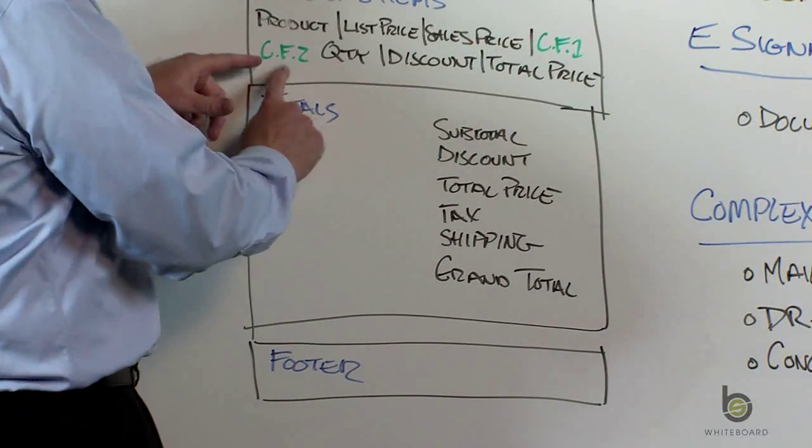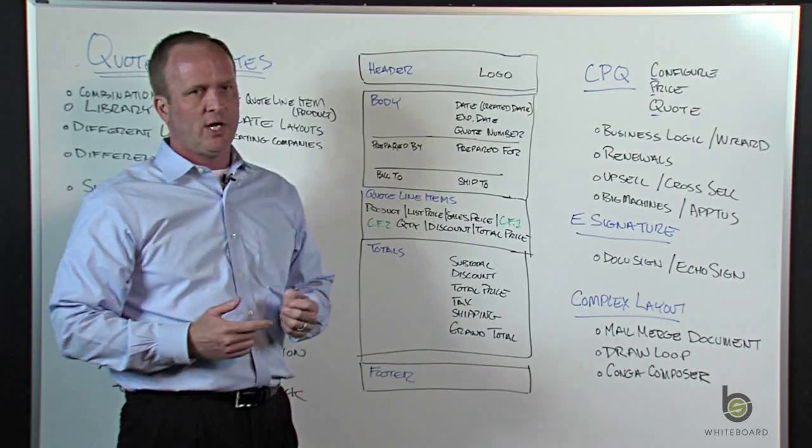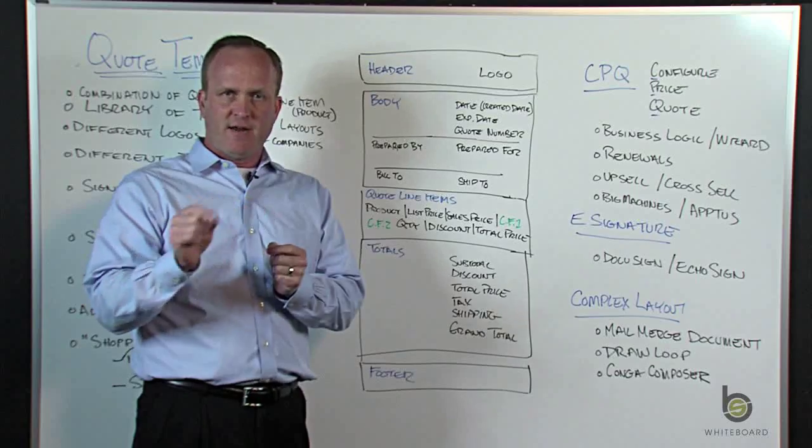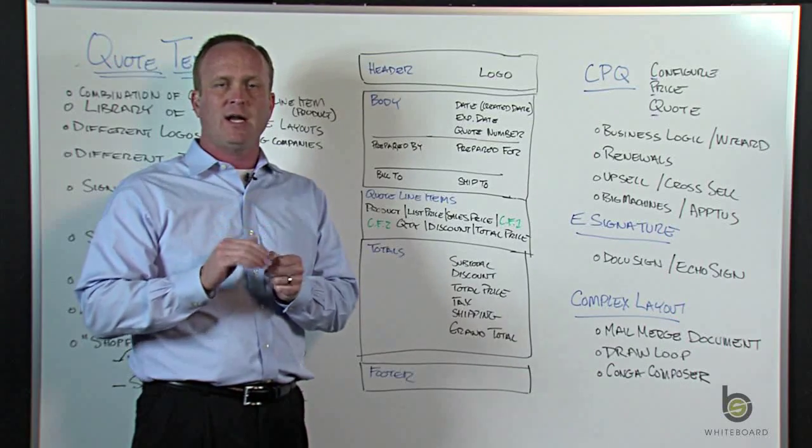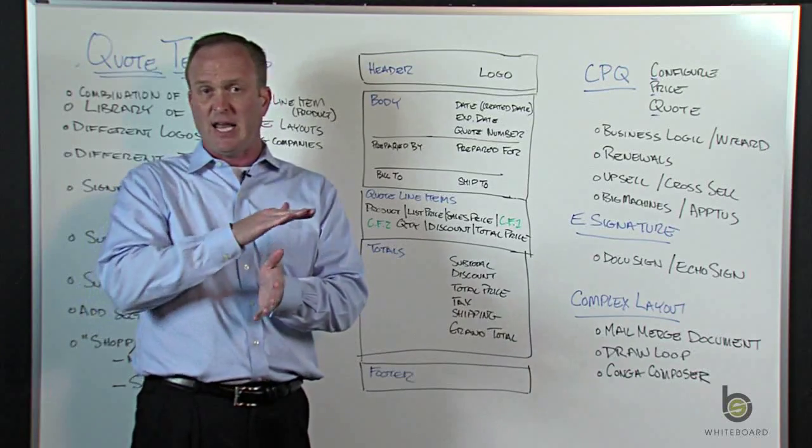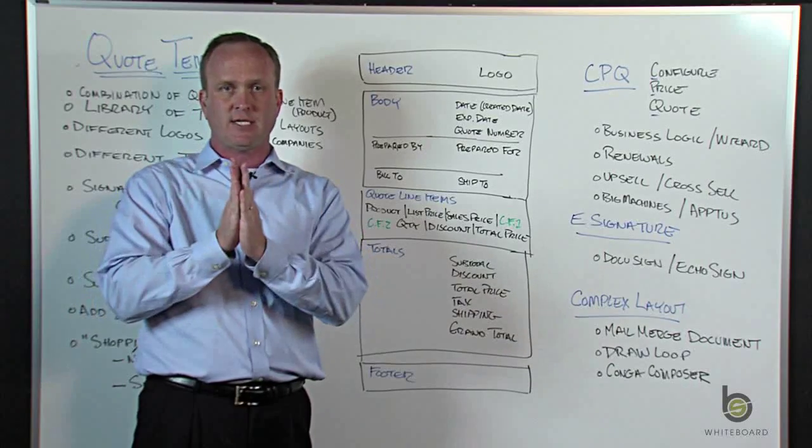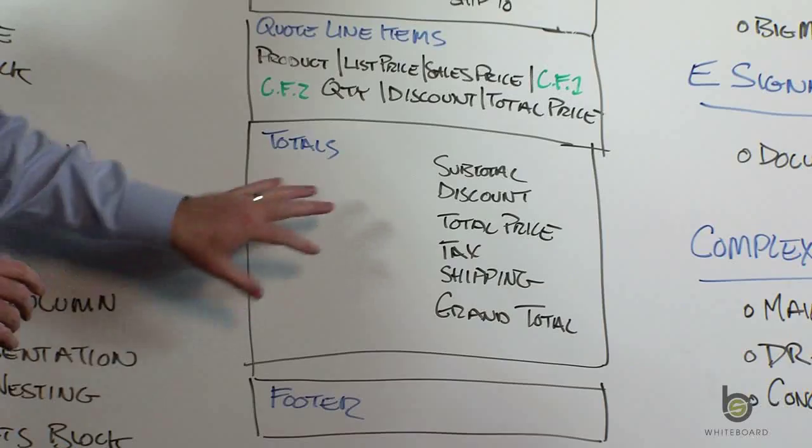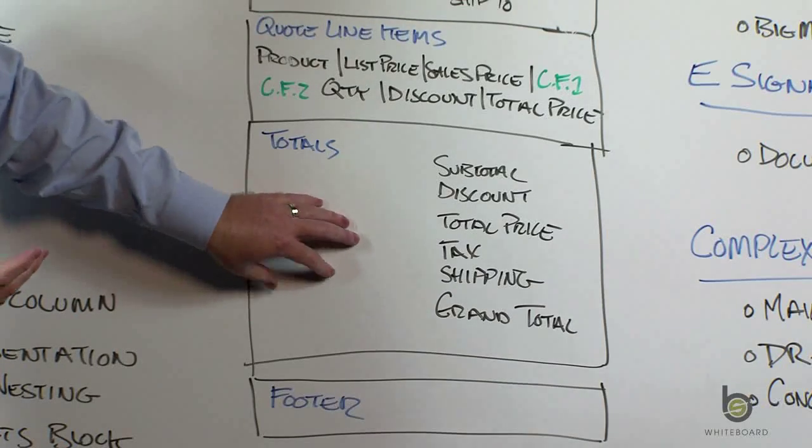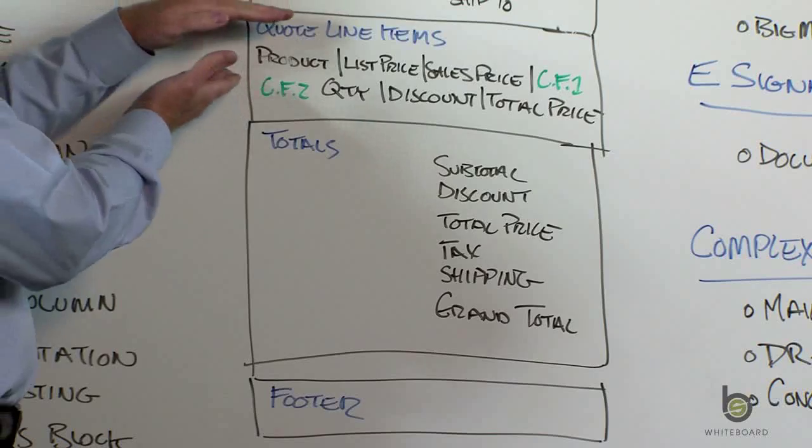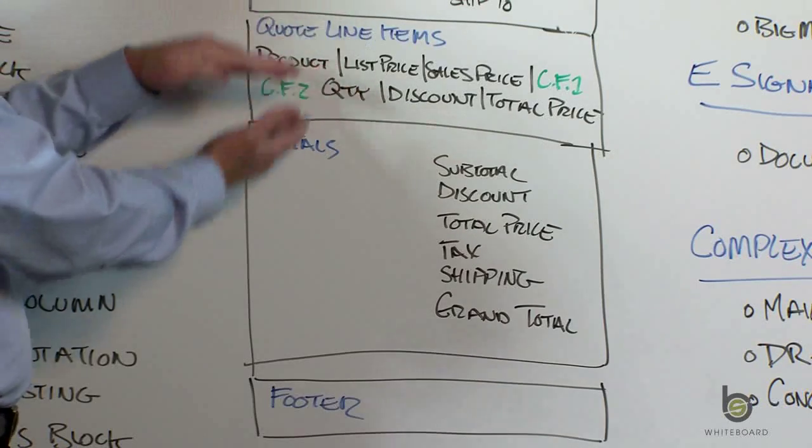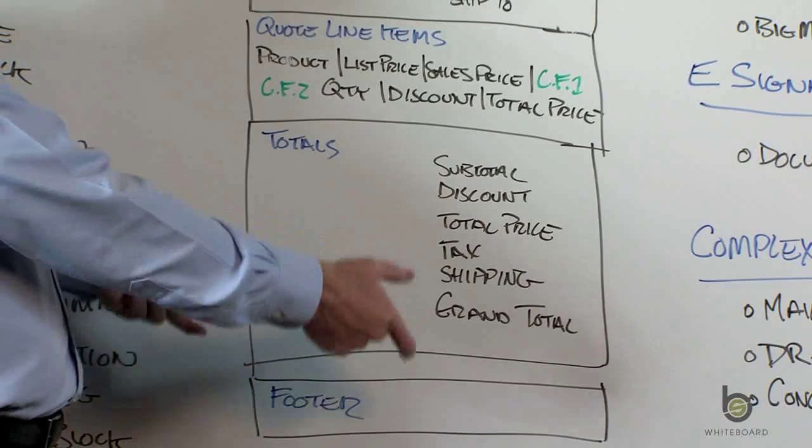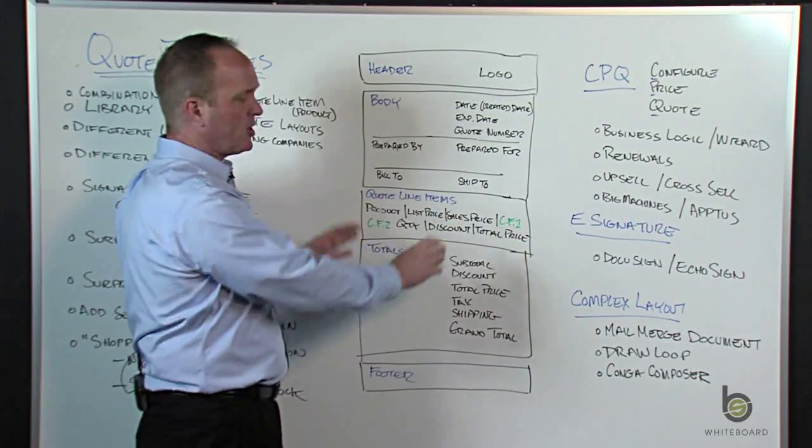I highlighted custom field one and custom field two in green. If you have that on your template, but you don't fill that information out when you're adding your quote line items, if there's no information there on any of the products, it will actually suppress that column. It won't display a blank column, which is kind of cool. One thing to remember on quotes is you only have one quote line item. So you can't have quote line items for products and then a separate section of products. You only get one section for products.